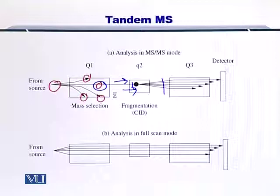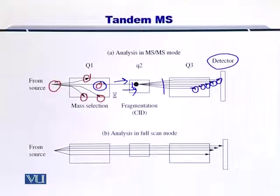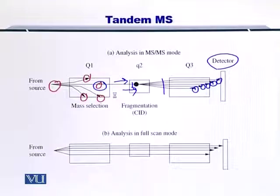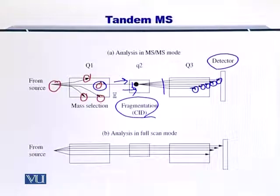Each fragment can be measured again using the detector and you will have multiple mass-over-charge ratios arriving at your computer. The important thing to note here is that the fragmentation strategy employed was CID, or collision-induced dissociation, as shown in your textbook.